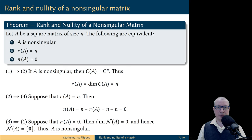Now, let's think — what vector space has zero dimension? Zero dimension means a basis for the vector space does not contain any vectors. In other words, this vector space has no basis. But the only vector space which has no basis is the trivial vector space,